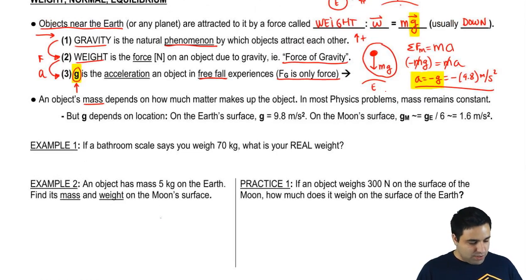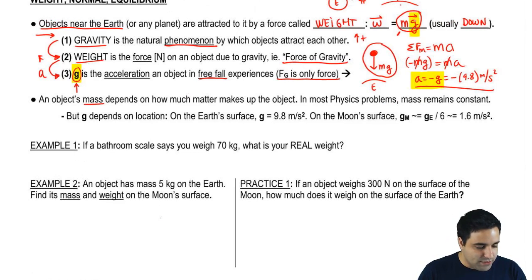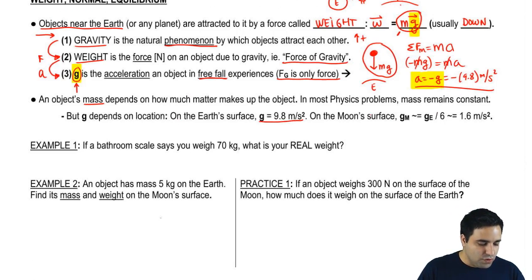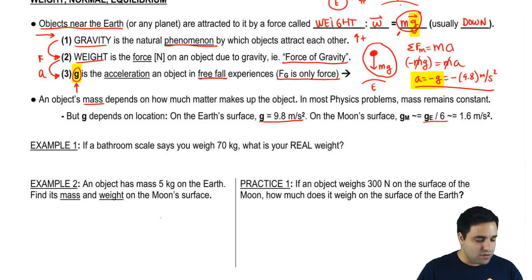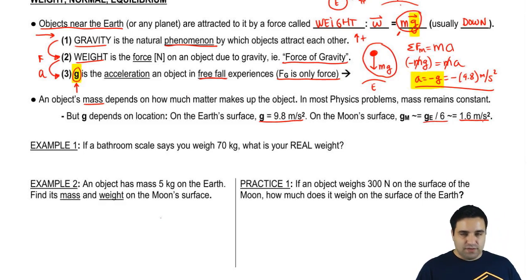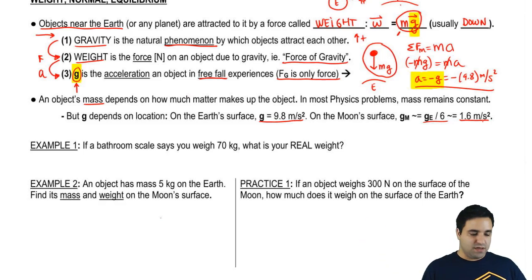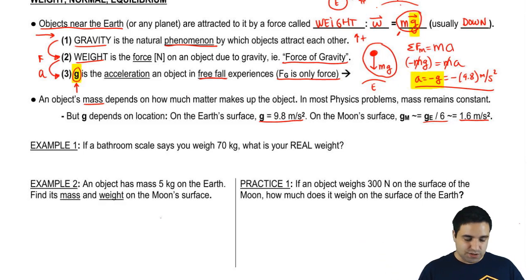However, g is going to change — g depends on the location. On Earth's surface, g is 9.8. But if you go to the moon, g is approximately 1.6. If you move an object to the moon, it doesn't change its mass, but g is different, so its weight will change because little g changes.